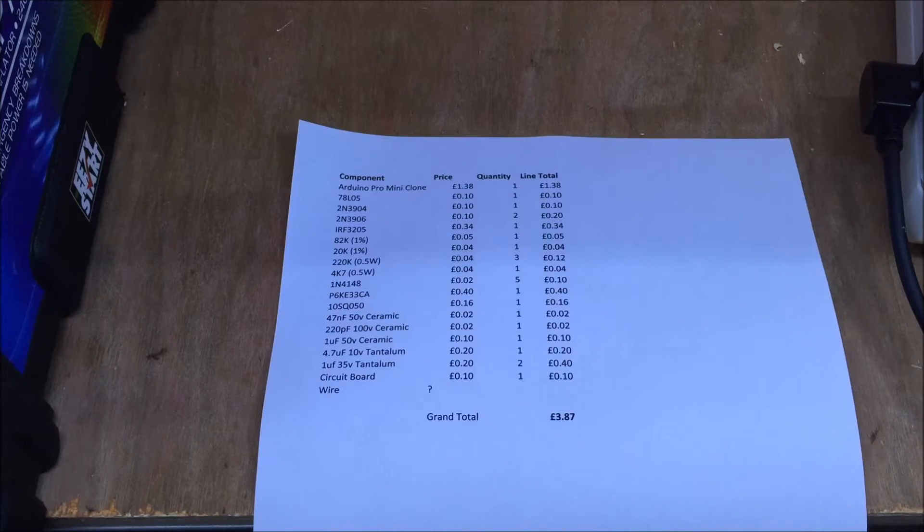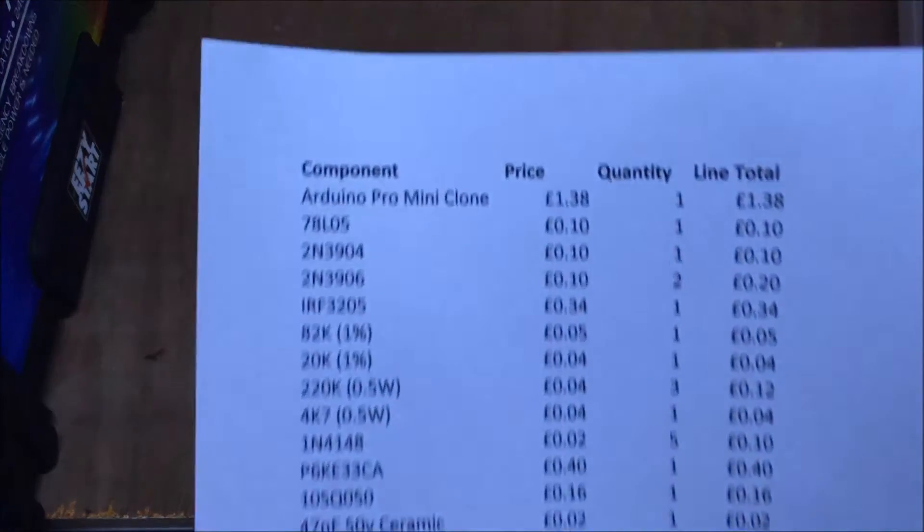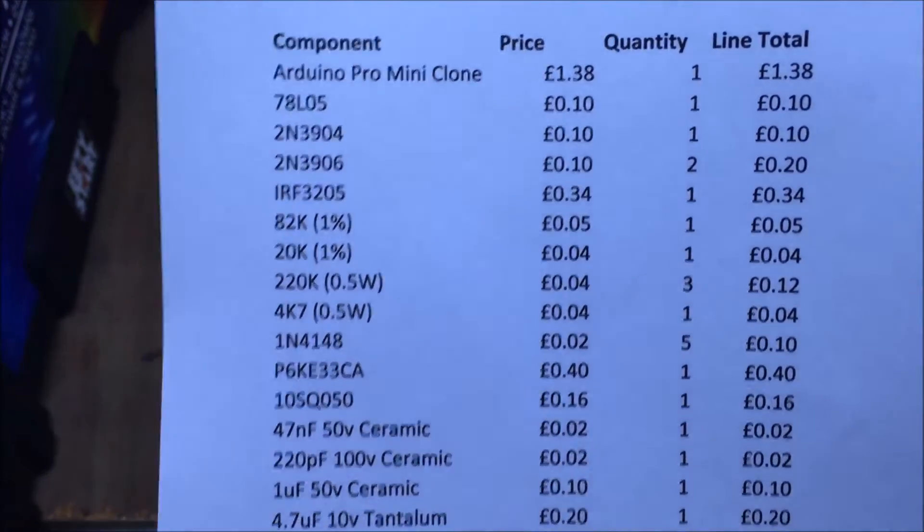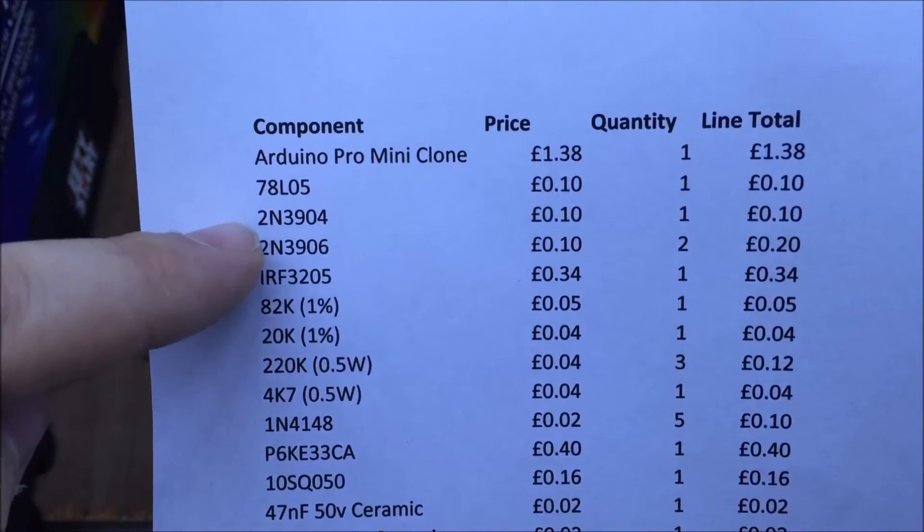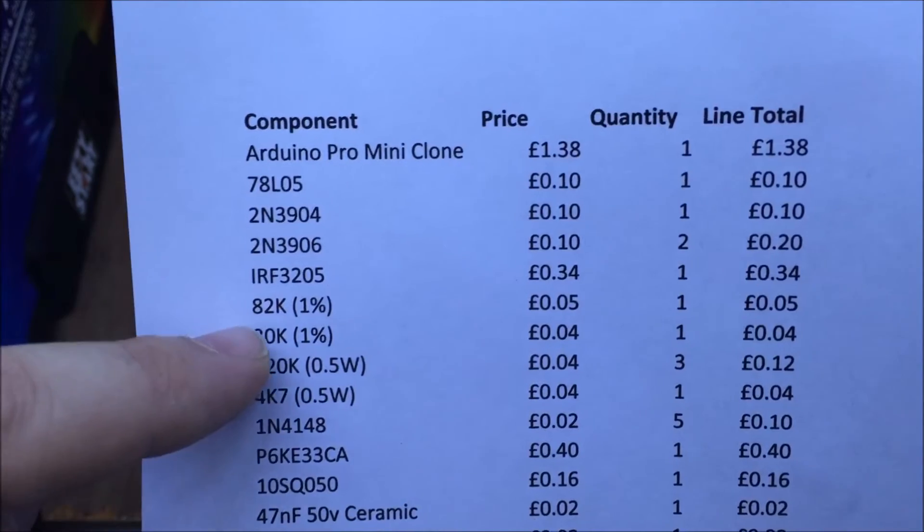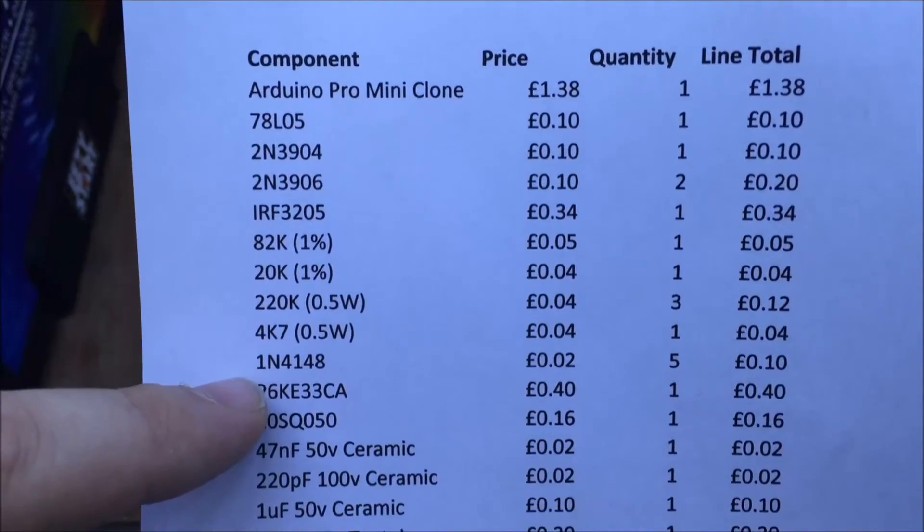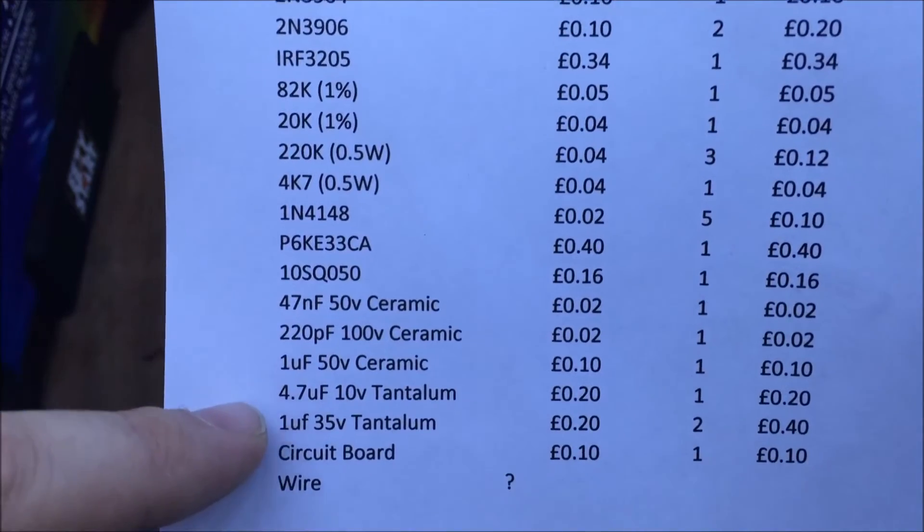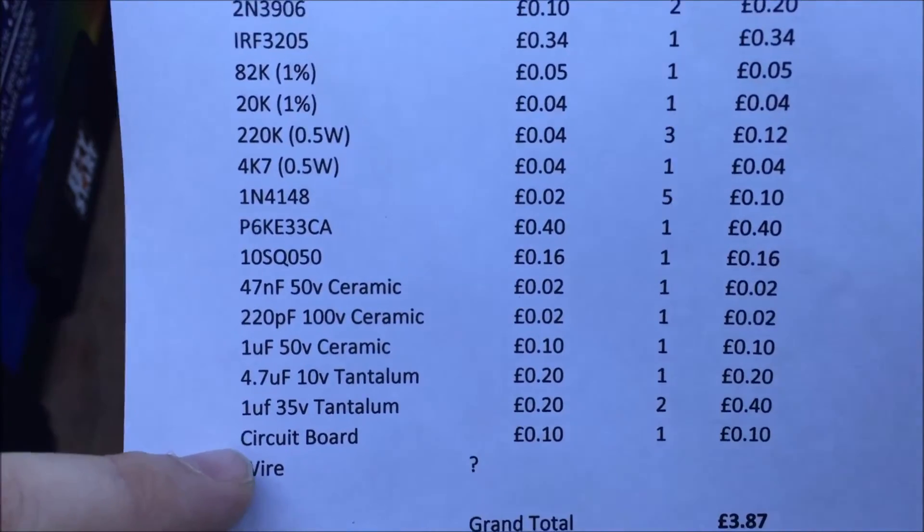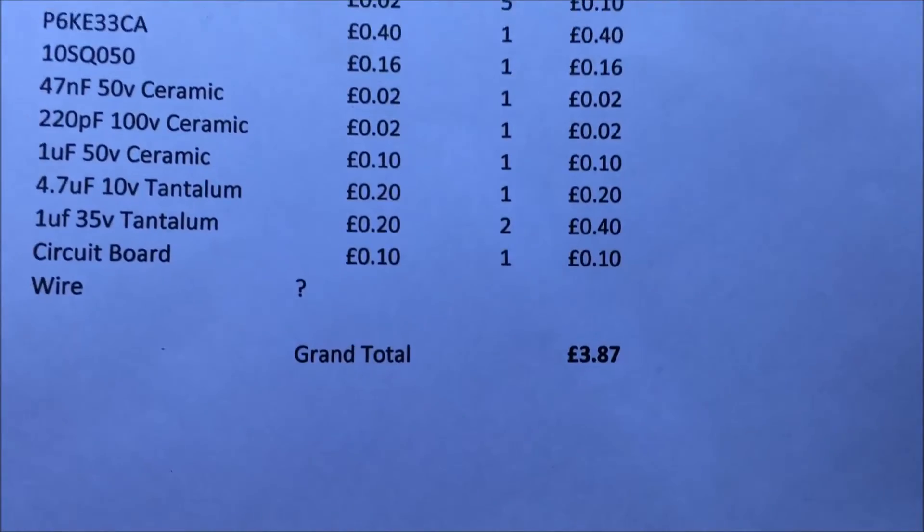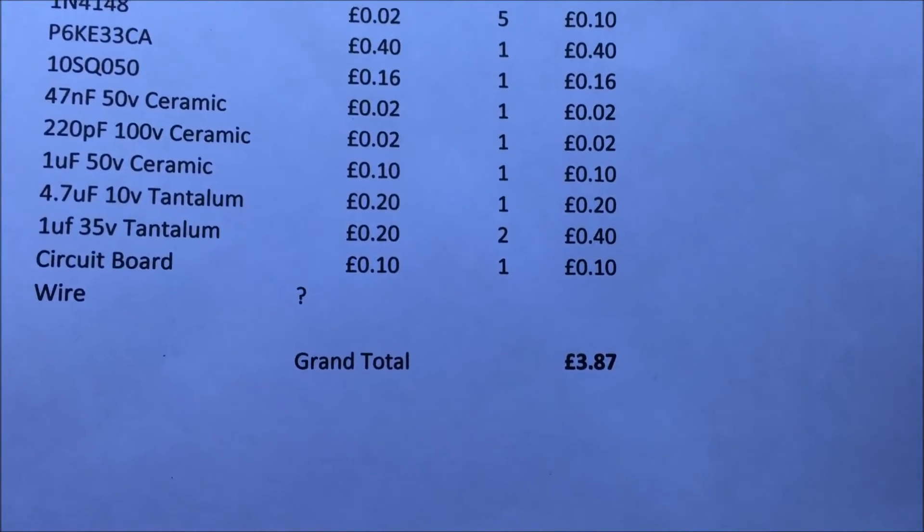Here's my list of parts, and as you can see with the Pro Mini clone that I used, £1.38, the voltage regulator, some transistors, MOSFET, some resistors here, diodes, and capacitors, with a little bit of circuit board, wire, and I guess some solder. The grand total for this project was about £3.87.